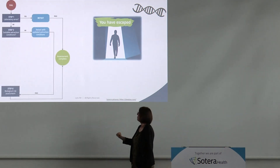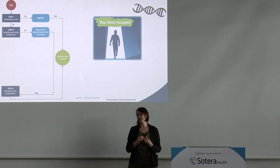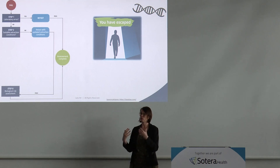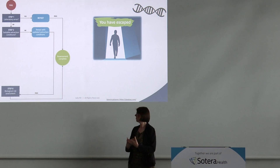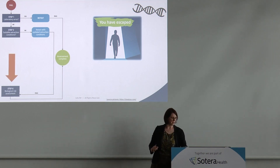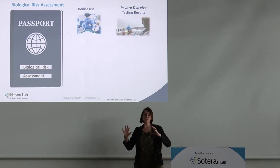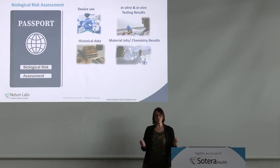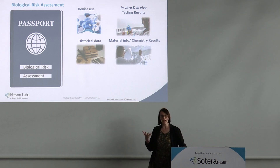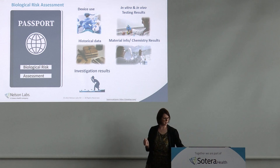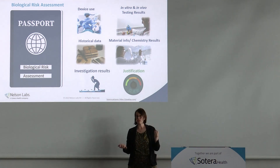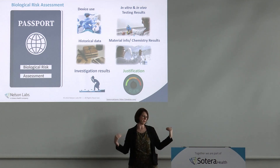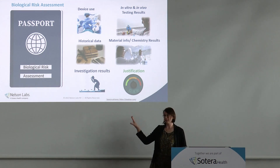Assuming the original extraction conditions were not appropriate and you retest with the right conditions — if you then have a pass, you're not completely out of the room yet. You still have to go through step six: the biological evaluation or risk assessment. You have to assess the risk of the device and create a kind of passport. This includes device use, in vivo and in vitro testing, historical data, material and chemical information, investigation results, and justification if you've changed parameters.